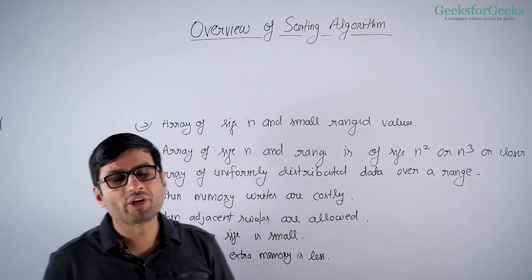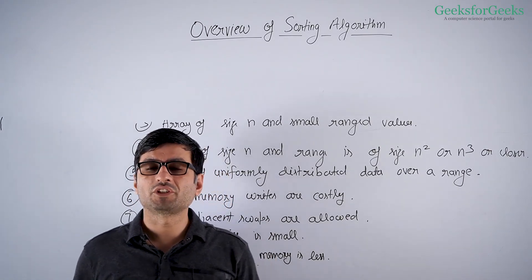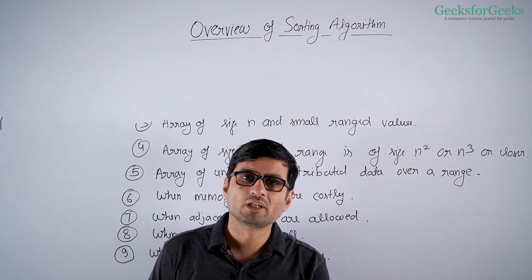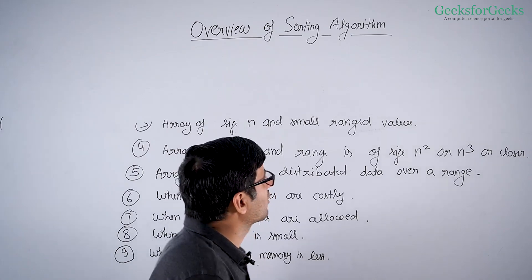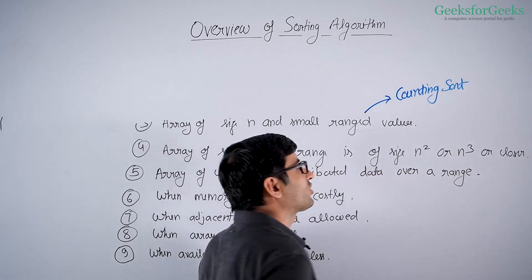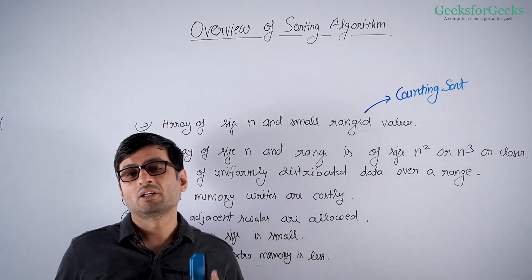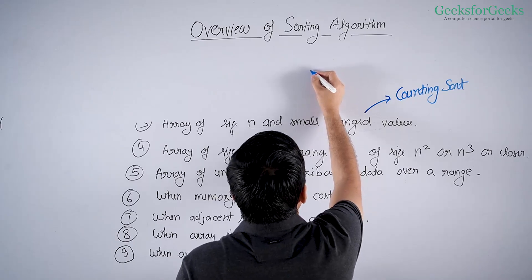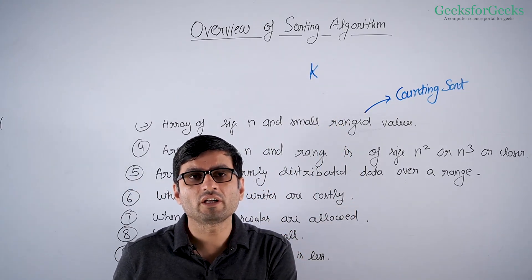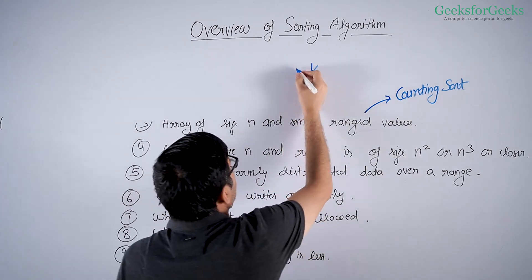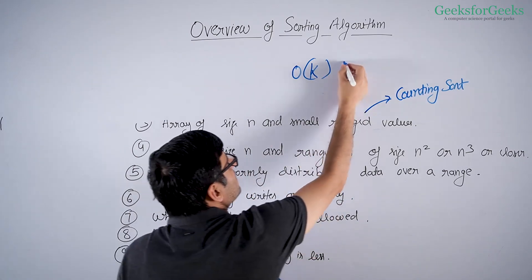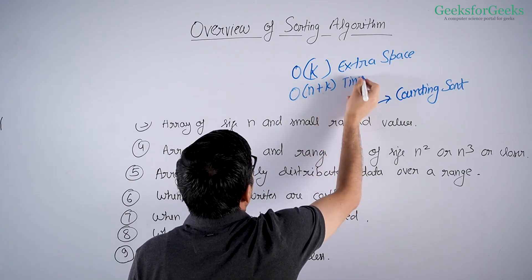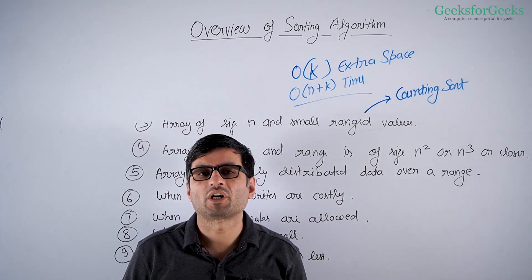The next problem is where you have an array of size n and the range of values is small. For example, if you have an array of size 1000 and values range from 100 to 200 only and you want to sort such an array — for such problems we have an algorithm called counting sort. Counting sort sorts an array of size n under the assumption that all values are in a small range. If your range has k values total, for example from 100 to 200 that's k equal to 100, counting sort takes O(k) extra space and O(n + k) time.